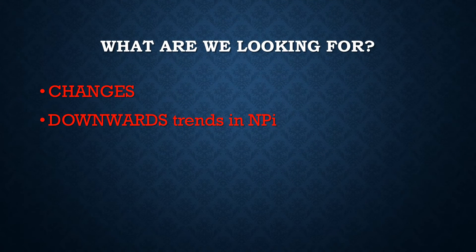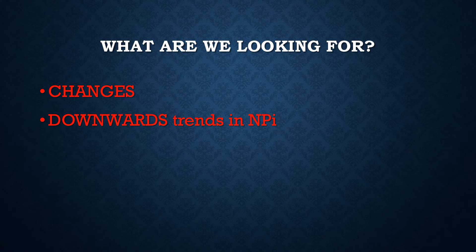What are we looking for when we see this data? It is really important to note changes, as changes are usually not a positive factor in a pupilometer assessment in my unit. Specifically, downward trends in the NPI — meaning I'm getting a brisk reading and now I'm getting a sluggish one, indicating the reactivity is slowing down. On the NPI scale from 0 to 5: a score of 3 or greater is brisk, less than 3 is sluggish, and 0 means the pupil is fixed.